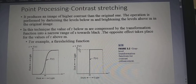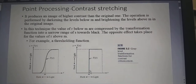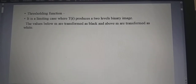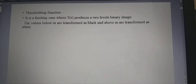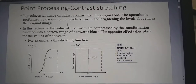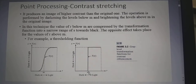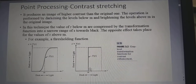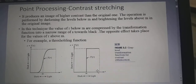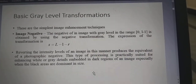The second is the thresholding function, which is a limiting case where T(r) produces a two-level binary image. Values below m are transformed to black and values above m are transformed to white, resulting in a binary representation.